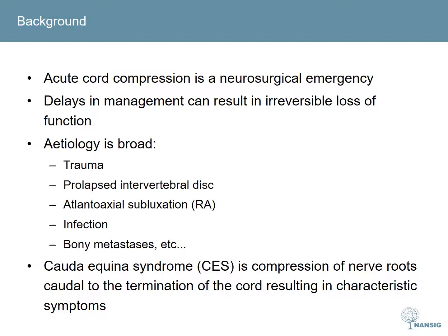Cord compression has myriad causes — essentially anything which compromises the stability of the spine. Some of the more common causes are spinal trauma, prolapsed intervertebral discs, atlanto-axial subluxation, which is a complication of rheumatoid arthritis, and infection. Things to bear in mind would be TB infiltrating the spine, known as Pott's disease, and abscess, which is often the result of a bacteraemia, commonly seen in IV drug users.